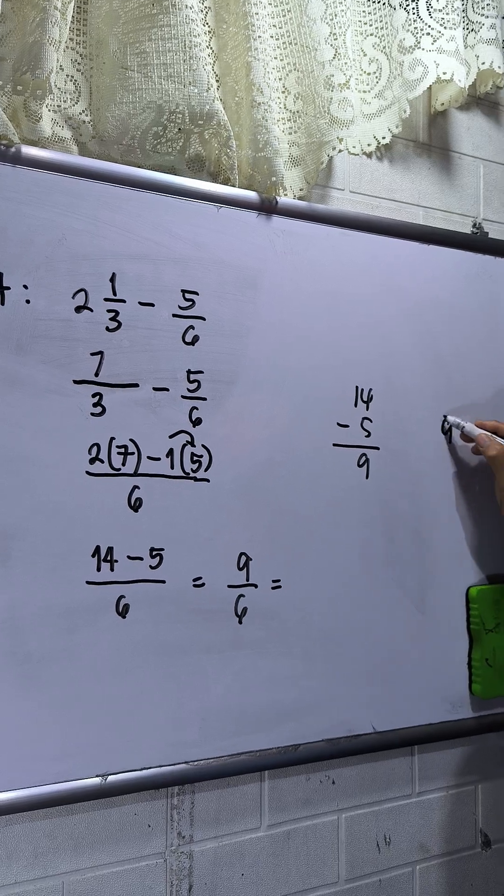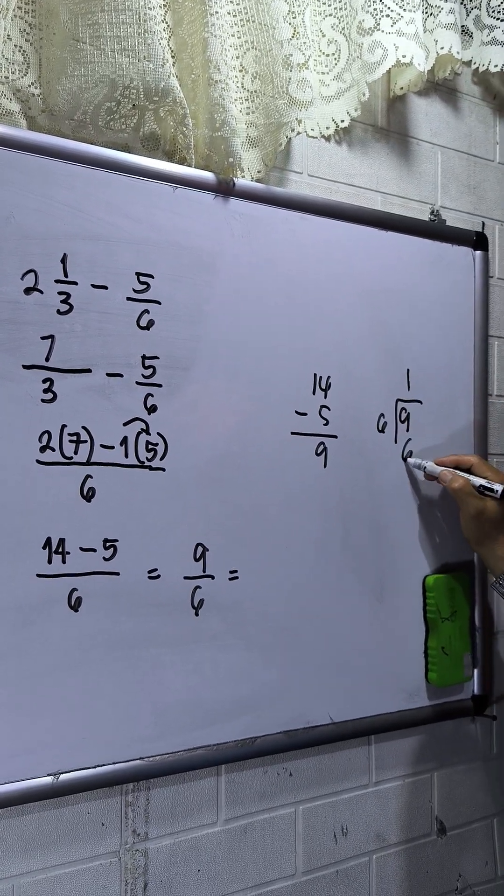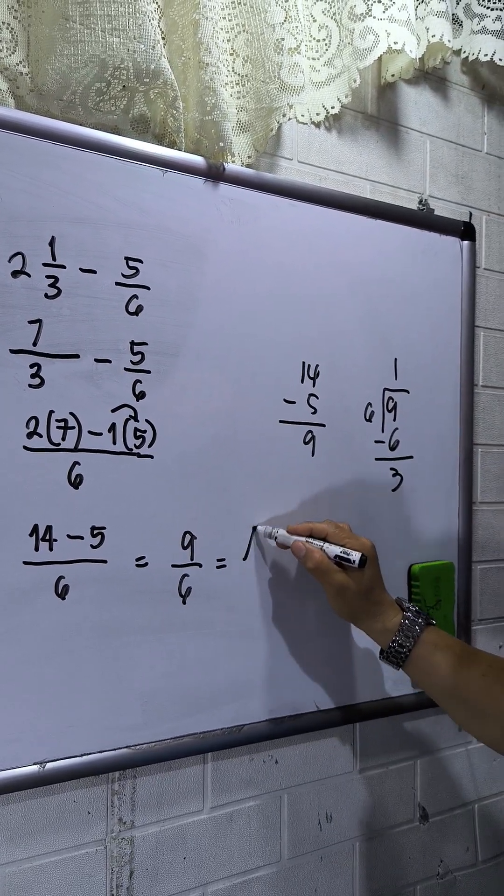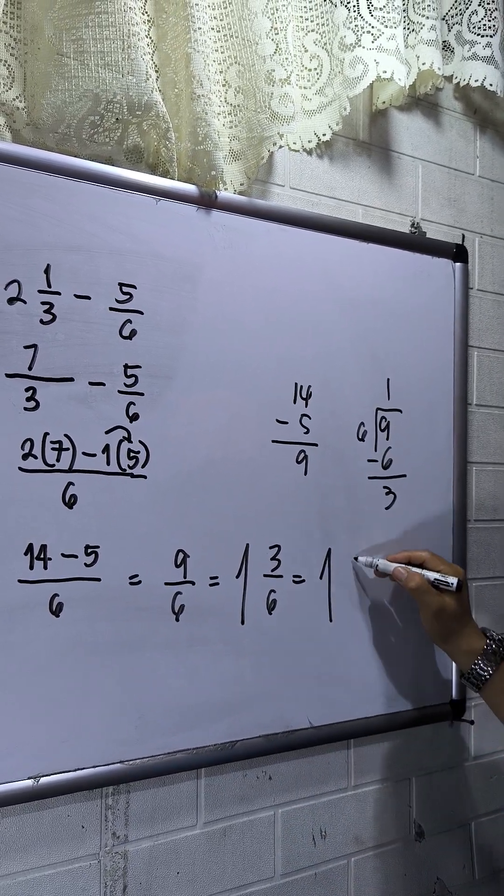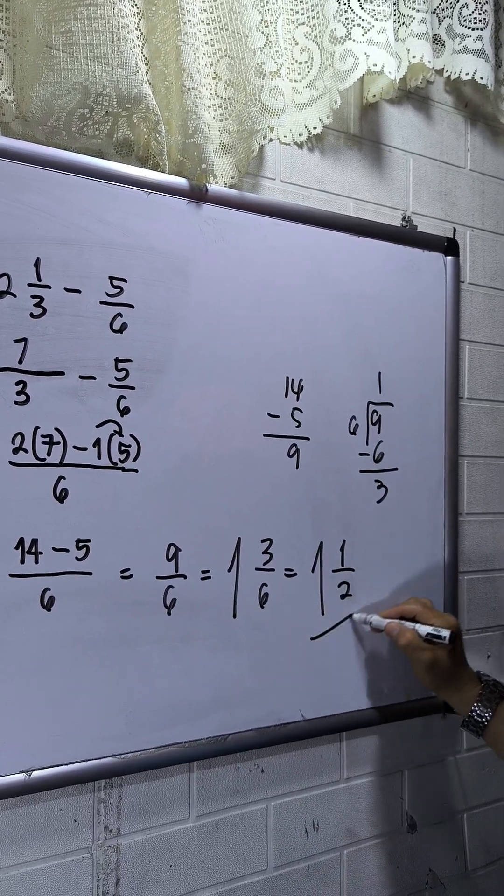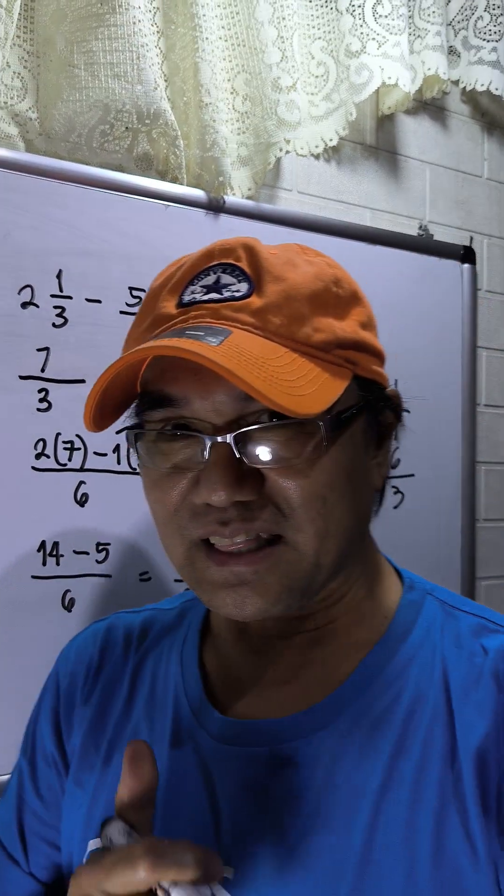So we divide: nine divided by six is one, with three remaining. The answer is 1 3/6. We reduce to lowest terms, so this will be 1 1/2. This is now my final answer. Thanks for watching.